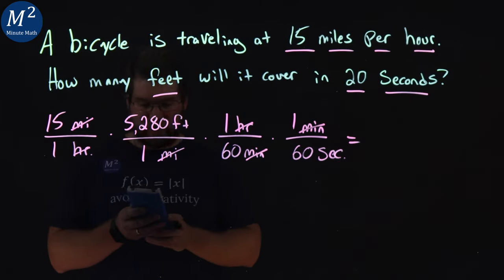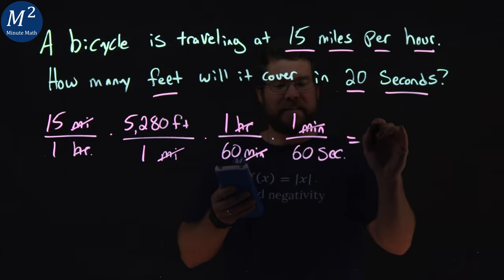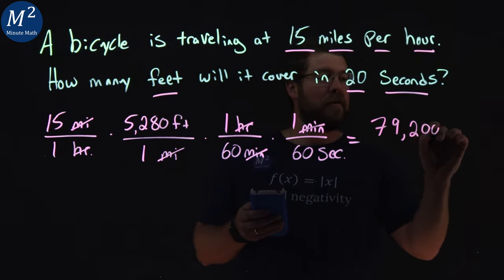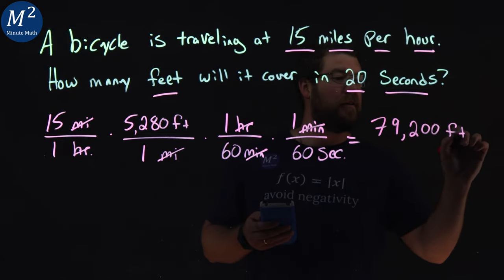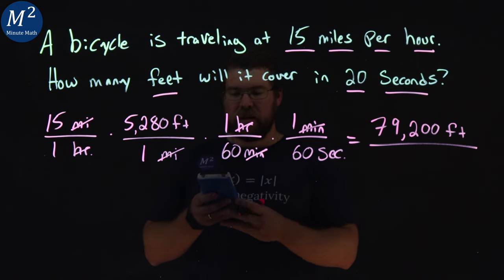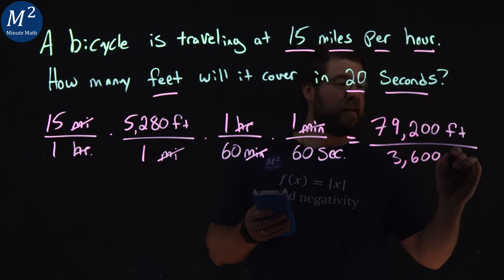So 15 times 5,280 is 79,200 feet are traveled in, well, 60 times 60 is 3,600 seconds.